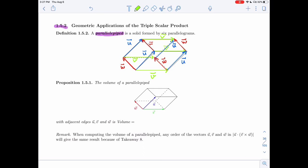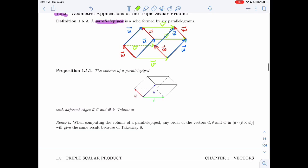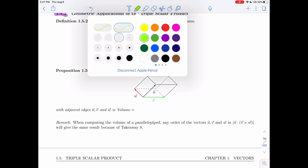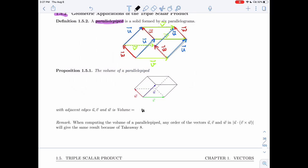Proposition 1.5.1: the volume of a parallelepiped with adjacent edges U, V, and W is the triple scalar product. Almost, not quite. I need to add one little thing. I need to add absolute value to make sure it's positive. The volume will be positive, but it's a triple scalar product.